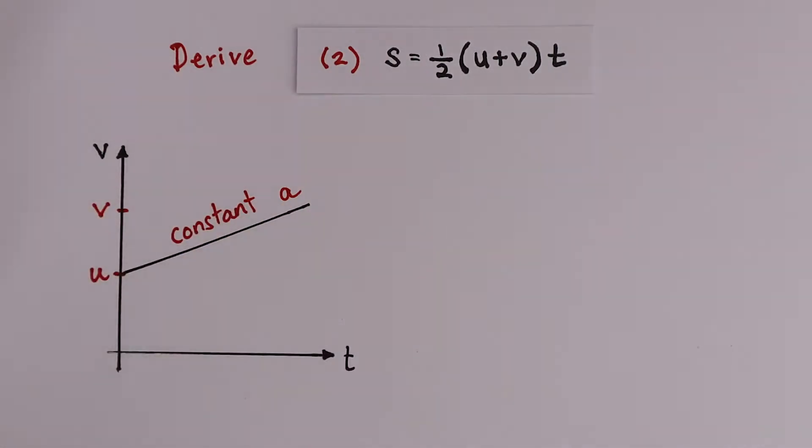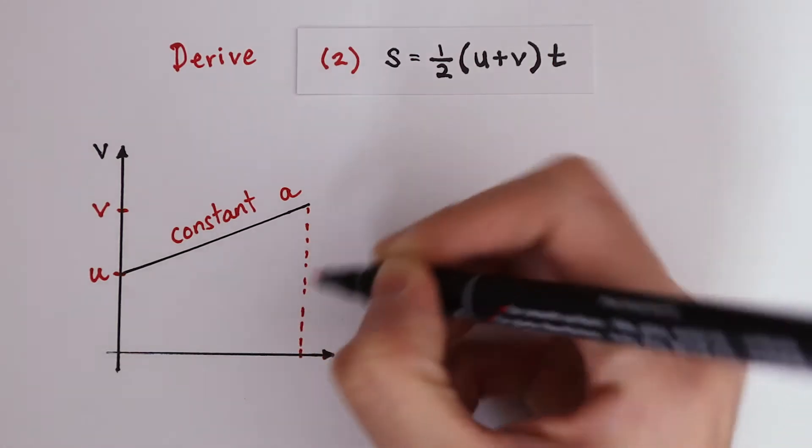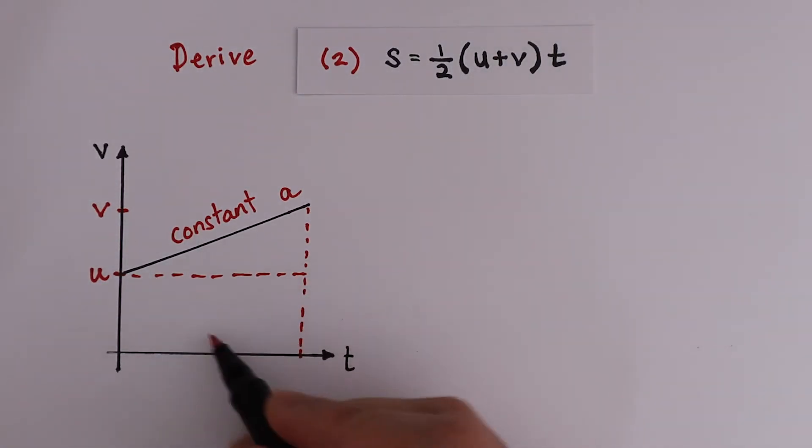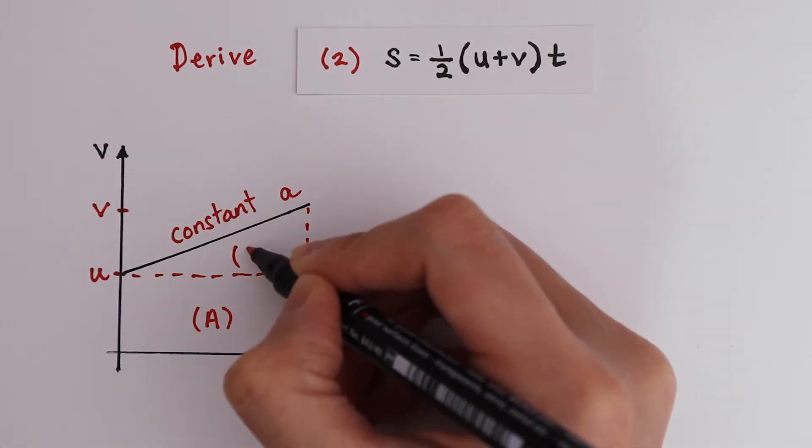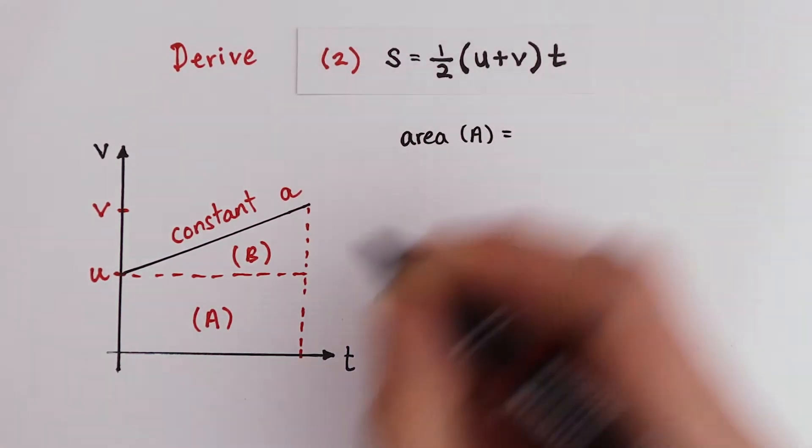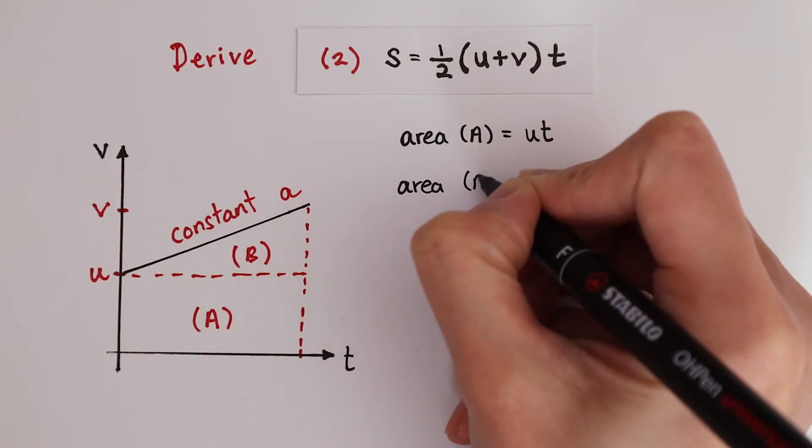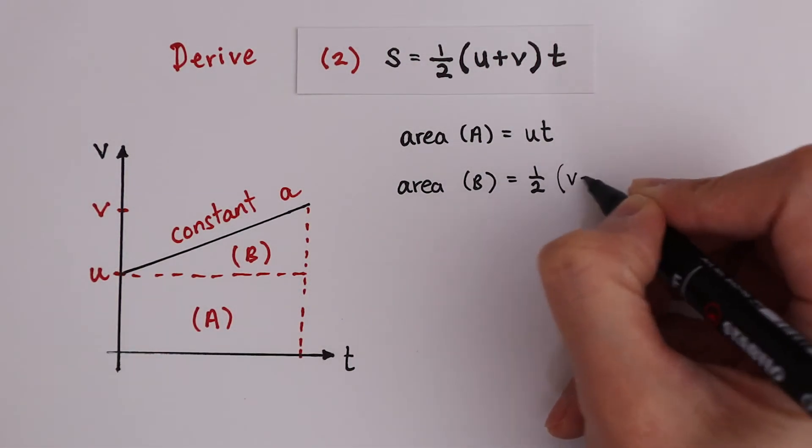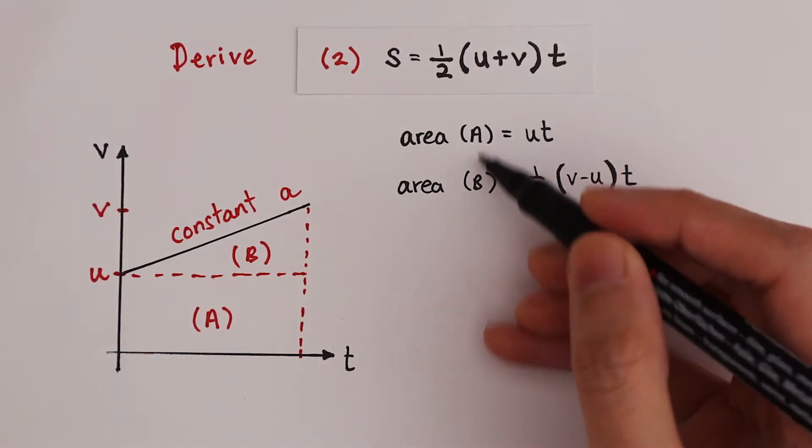v. To get equation 2, we want to find the object's displacement, which can be extrapolated from the graph by working out the area underneath the graph. To make this calculation simpler, we're going to break this down into area A and area B. Area A is just the area of a rectangle, u times t. Area B is the area of a triangle. That's half times v minus u times t.